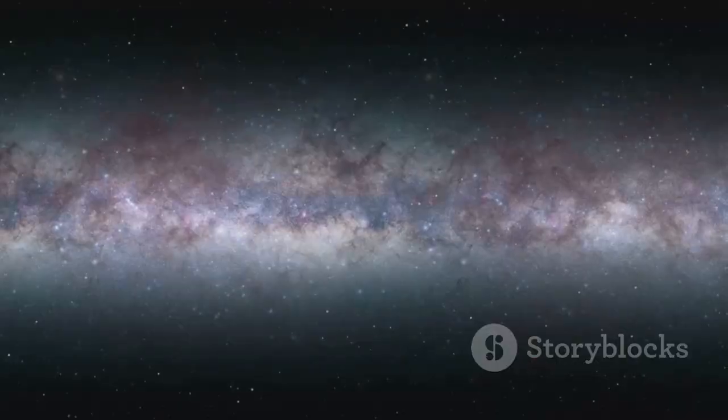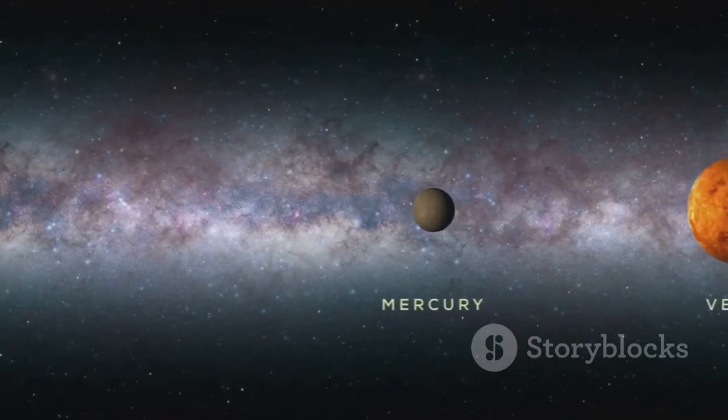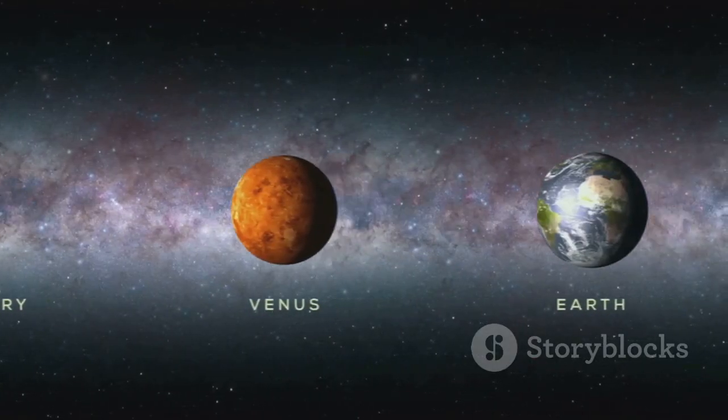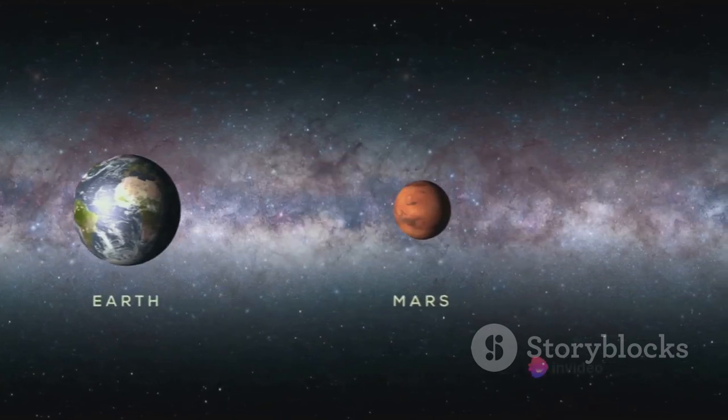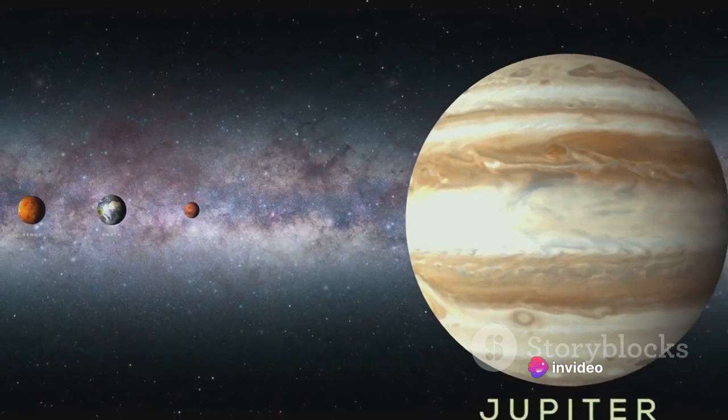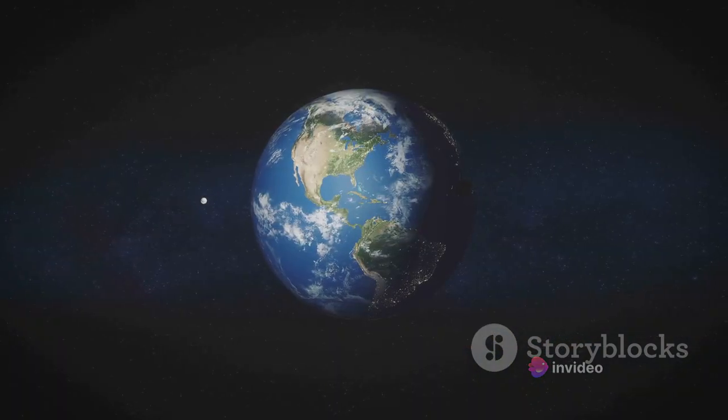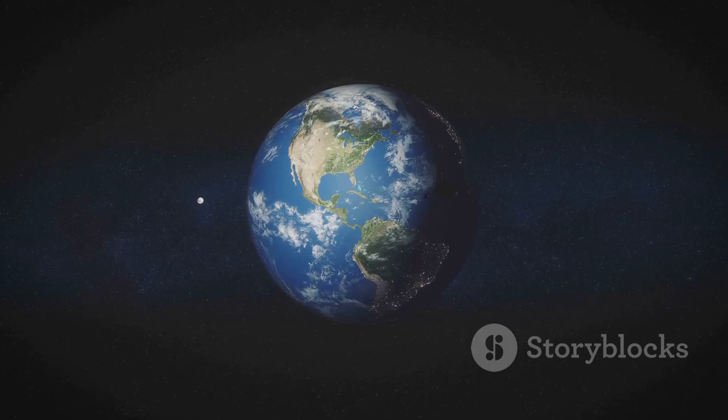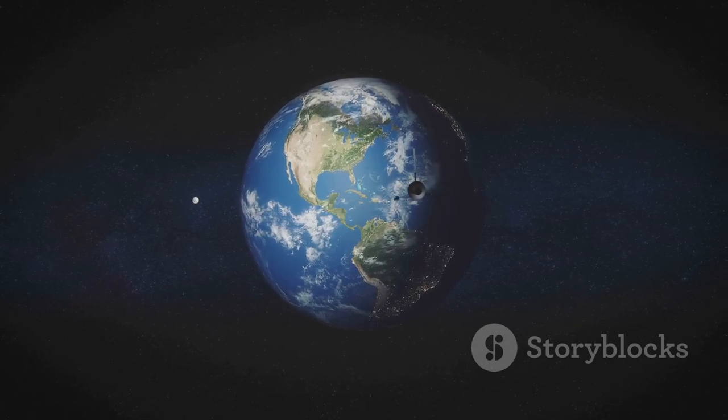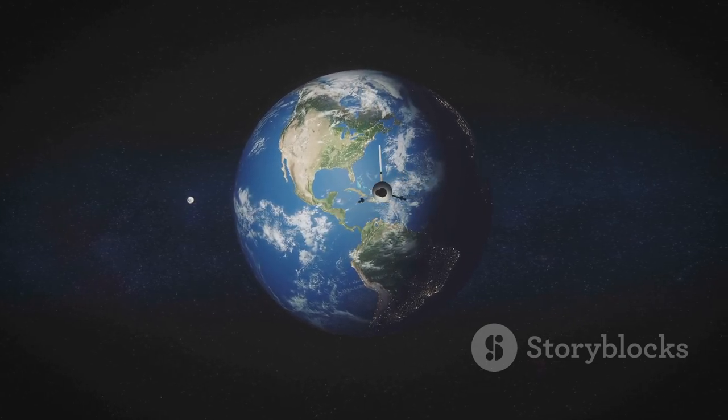So, how big is our observable universe? Well, it's estimated to be about 93 billion light-years in diameter. To give you a sense of scale, if we shrunk the observable universe down to the size of the Earth, our Milky Way galaxy would be smaller than a grain of sand, and our entire solar system would be smaller than a single atom.